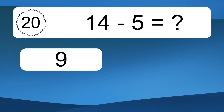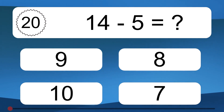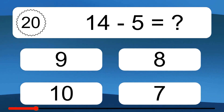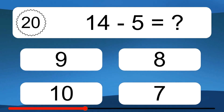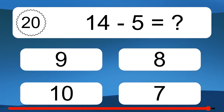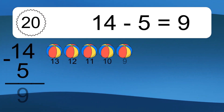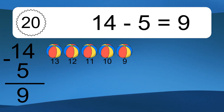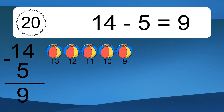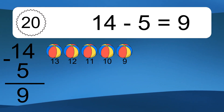14 minus 5 equals what? 14 minus 5 equals 9. Let's count it. 13, 12, 11, 10, 9.